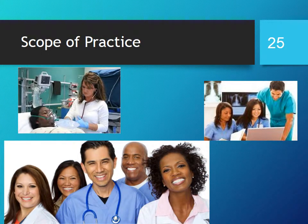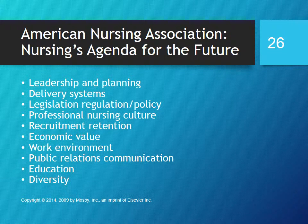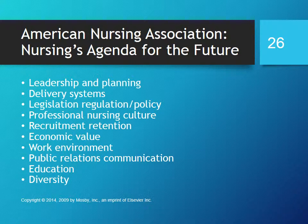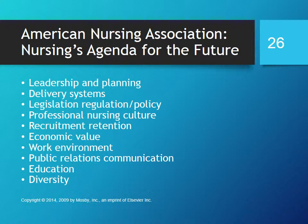The primary ADN roles are provider of care, manager of care, and member of the profession. The American Nurses Association agenda for the future includes leadership and planning, change in delivery systems, legislation and regulation and policy, becoming more involved, developing a professional nursing culture, recruitment and retention of professional nurses, identifying the economic value of registered nurses, increasing and enhancing the work environment to make it easier to retain nurses in the profession, public relations and communication regarding nursing, solidifying and progressing education for nurses, and enhancing diversity in the nursing profession by bringing in more male nurses and more people of other cultures.